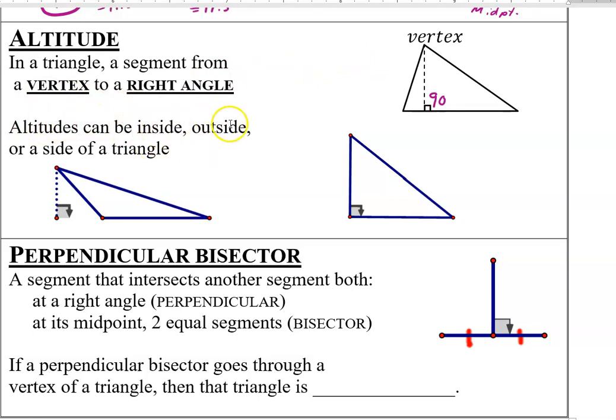Altitudes can be inside, outside, or actually on the side of the triangle. So, for instance, in this one, this is an altitude coming straight down there because it's going from a vertex to a right angle. In fact, this side is also an altitude because it's going from vertex to a right angle. But anytime you see altitude, you're thinking, I've got a right angle.